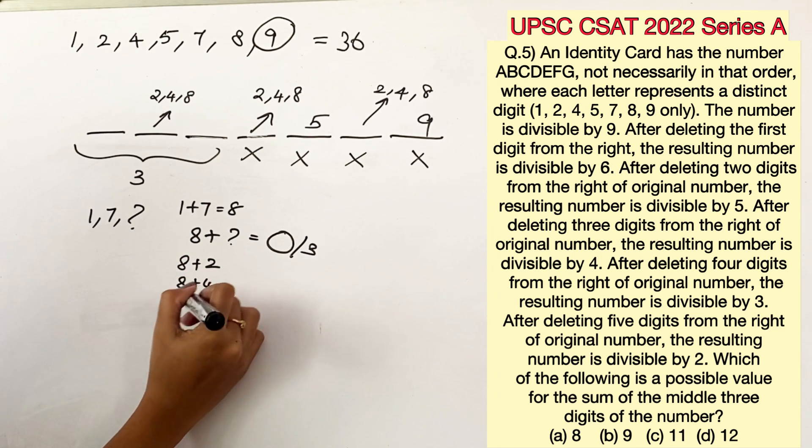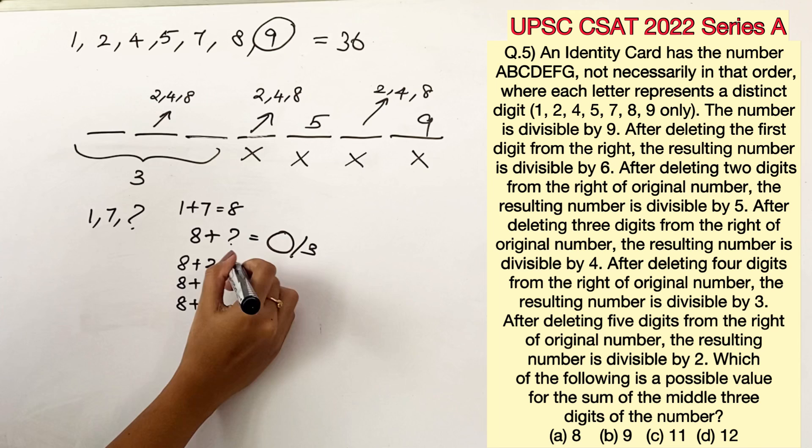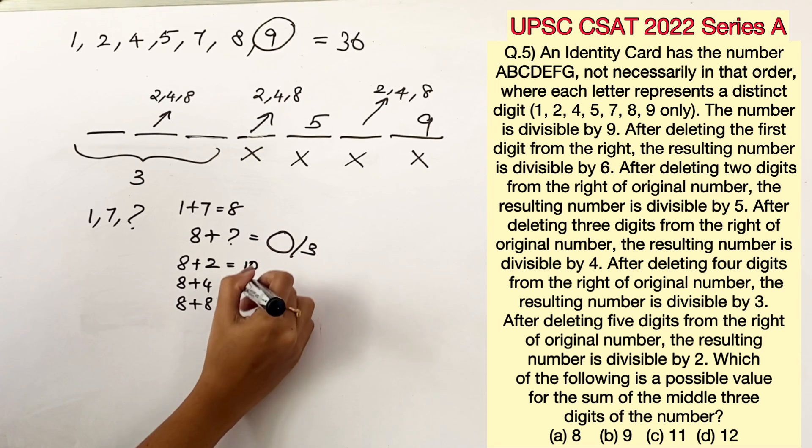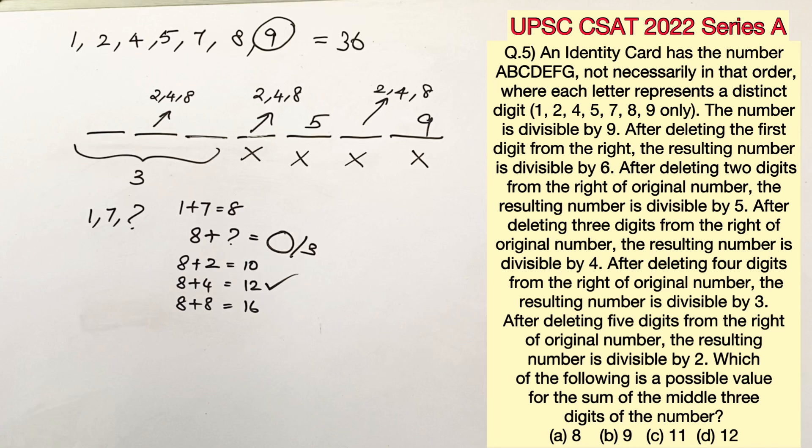We have 2, 4 and 8. So 8 plus 2 will give us 10. 8 plus 4 will give us 12. 8 plus 8 will give us 16. And clearly 12 is the only number that is divisible by 3. So now we can say that this space can be only occupied by 4.